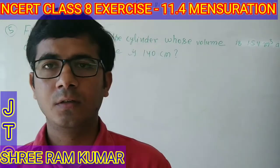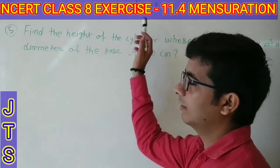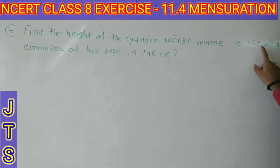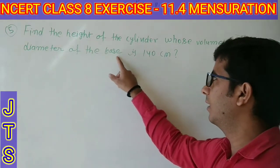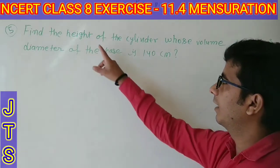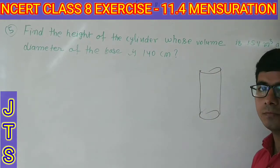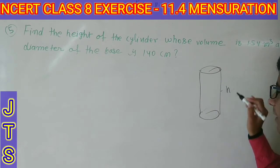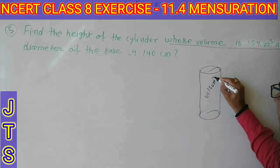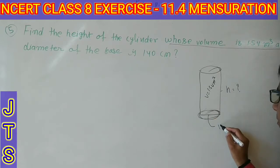Good morning students, welcome to math class. Today we will discuss Exercise 11.4 Mensuration, Question number 5: Find the height of the cylinder whose volume is 1.54 m³ and diameter of the base is 140 cm. एक cylinder दिया हुआ है जिसकी height निकालनी है।